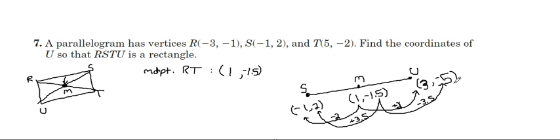So, our missing coordinate for this point U, in order for this to be a rectangle, is 3, negative 5. And there you are.